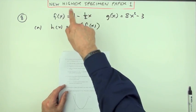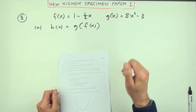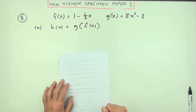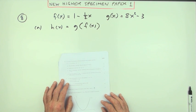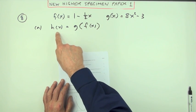So number 8 then, from this new higher specimen paper number one. We've got functions of a function here. It says to find the set of real numbers—well, we're not doing that calculation. Find an expression for h(x).